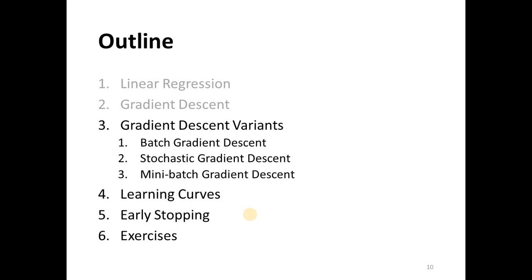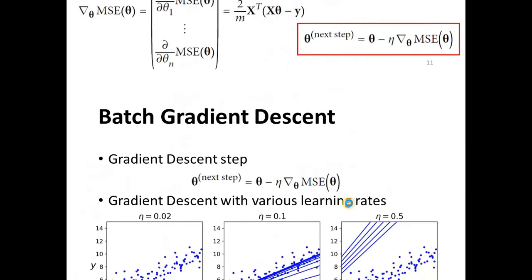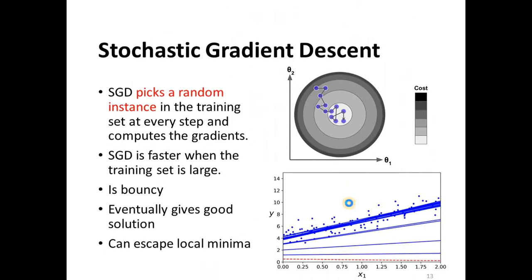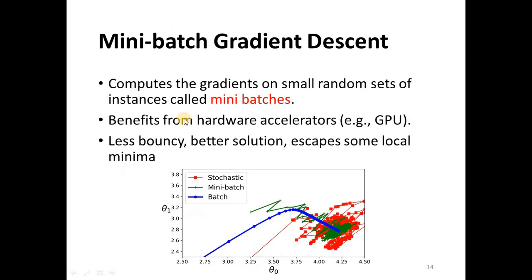There are three main variants of the gradient descent algorithm. In batch gradient descent, the entire training batch is used at each step. In stochastic gradient descent, it picks a random instance from the training set at every step. The mini-batch gradient descent algorithm computes the gradients on a small random subset of the training set.